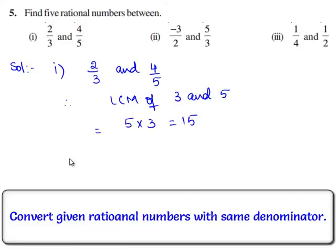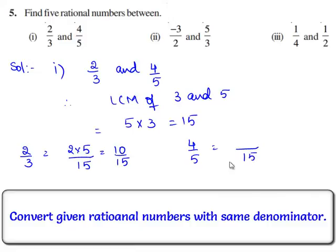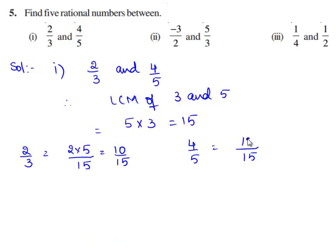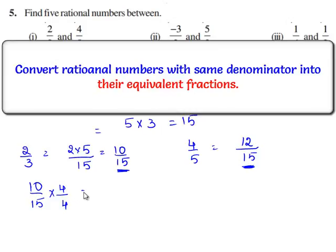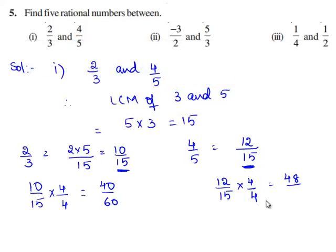Now we express each rational number with the denominator as LCM. Therefore, 2 by 3 is equal to 10 by 15, since 2 times 5 is 10. And 4 by 5 is written as with 15 as denominator: 5 times 3 is 15 and 4 times 3 is 12. Now, we shall find the equivalent rational numbers for 10 by 15 and 12 by 15. Let us multiply 10 by 15 with 4 on both numerator and denominator. So, we have 10 times 4 is 40 and 15 times 4 is 60. We should also multiply 12 by 15 with 4 on both numerator and denominator. So, we have 12 times 4 is 48 and 15 times 4 is 60.